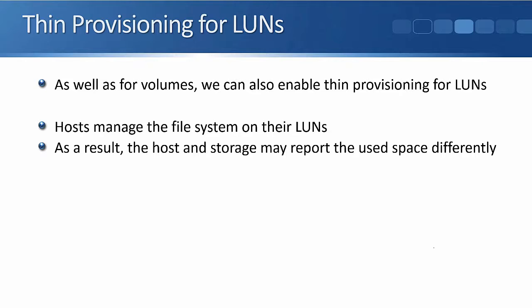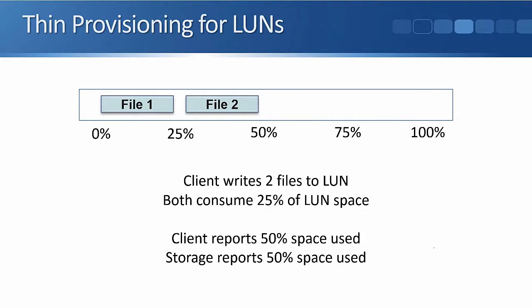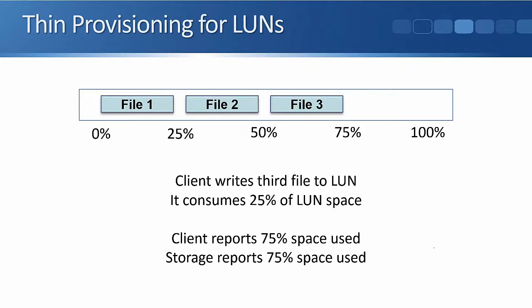As well as for volumes, we can also enable thin provisioning for LUNs. There's a potential issue with this because hosts manage the file system themselves on their LUNs, so the host and the storage may report used space differently. For example, a client writes two files to the LUN, each consuming 25% of the LUN space. The client reports 50% space used and the storage also reports 50% space used. Then the client writes a third file consuming another 25%. The client reports 75% used and the storage also reports 75% used.